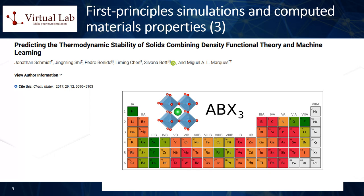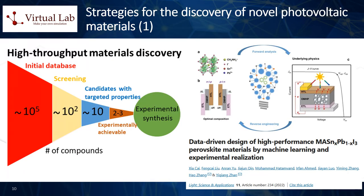Seven: exciton binding energy. In some materials, particularly in organic and perovskite photovoltaics, the photogenerated electron and hole can form a bound state called an exciton. The energy required to separate this exciton into free charges that contribute to current is the exciton binding energy. A lower binding energy typically facilitates charge separation and improves device performance. Here is a general overview of how first principles simulations can accelerate the discovery of novel photovoltaic materials.